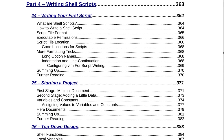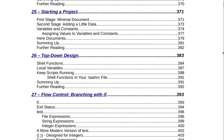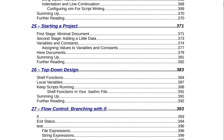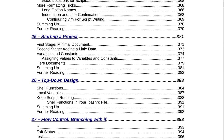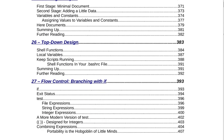Continuing in Part 4, Writing Shell Scripts, Section 26 is Top Down Design on page 383. That covers shell functions, local variables, keeping scripts running, shell functions in your .bashrc file, summing up, and further reading on page 392.